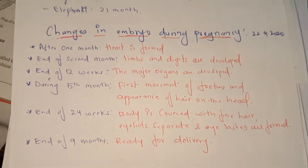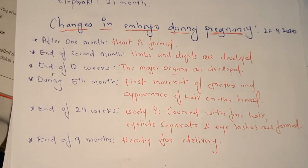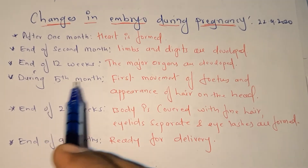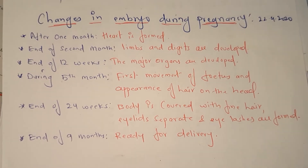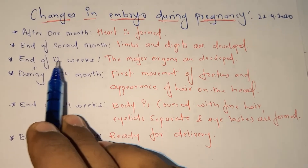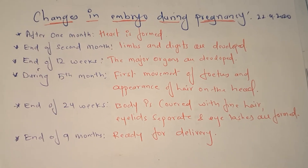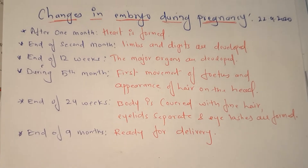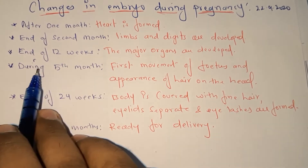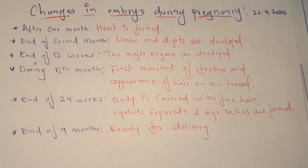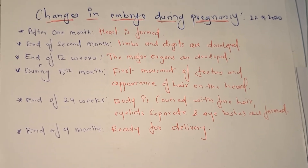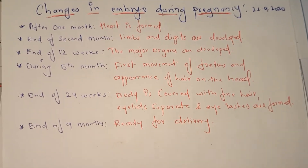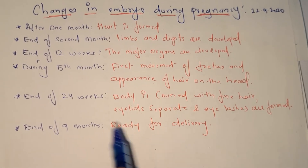Changes in the embryo during pregnancy: After one month, the heart is formed and you can hear the heartbeat (lub-dub sound, as studied in first year). By the end of the second month, limbs and digits (hands, legs, and fingers) are formed. By the end of the twelfth week, major organs such as the brain, stomach, and kidneys are formed.